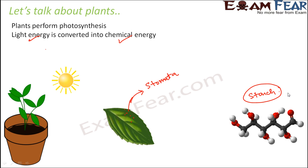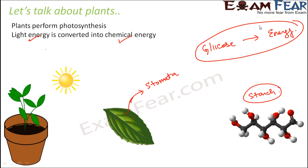Plants also need energy to perform all their life processes. Even though plants do not move from one place to another, they still need energy to carry out photosynthesis and other internal processes. So in plants also, the glucose that is prepared needs to be converted into energy — that is where respiration comes into picture. For respiration, glucose needs to be broken down and oxidized to produce energy, and this process requires oxygen. Carbon dioxide is produced, which can actually be utilized for photosynthesis.